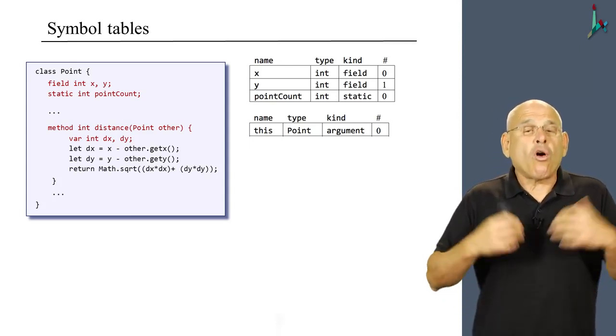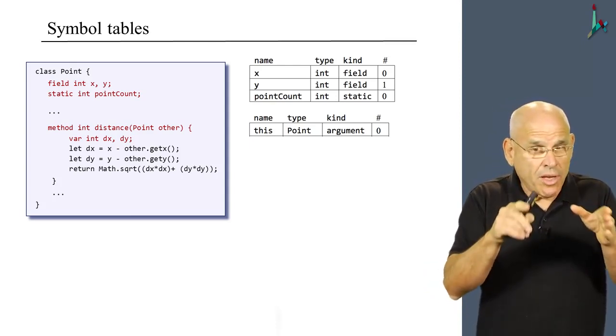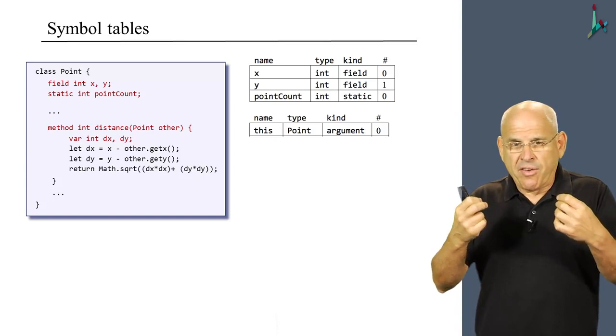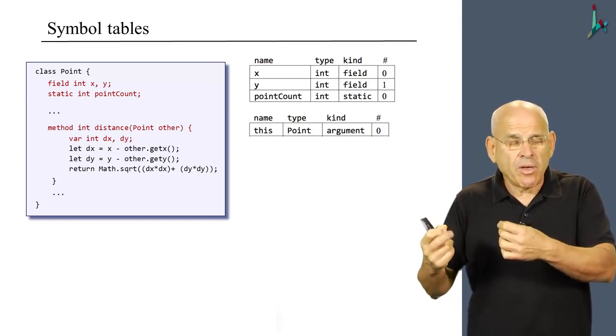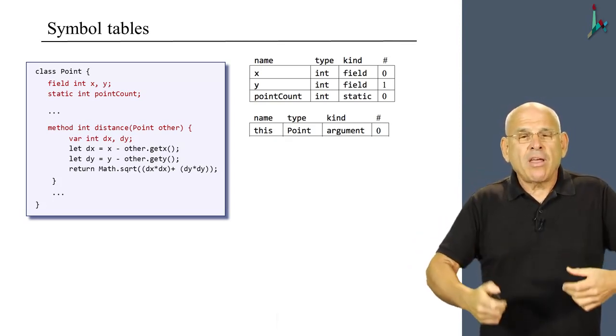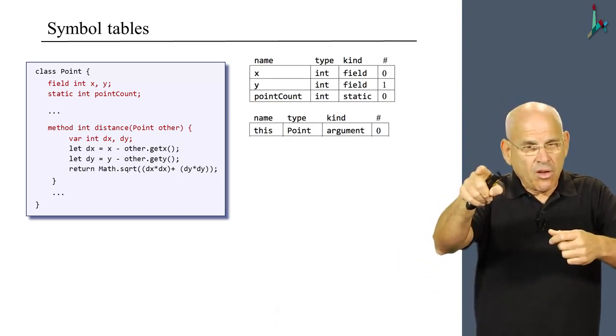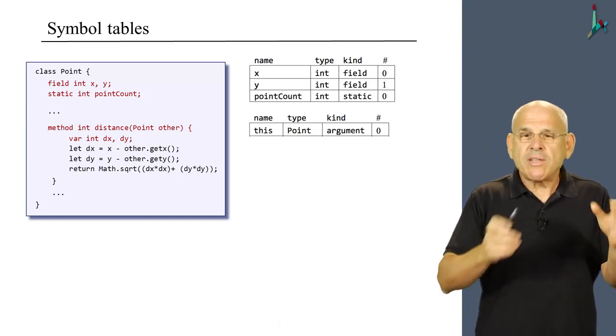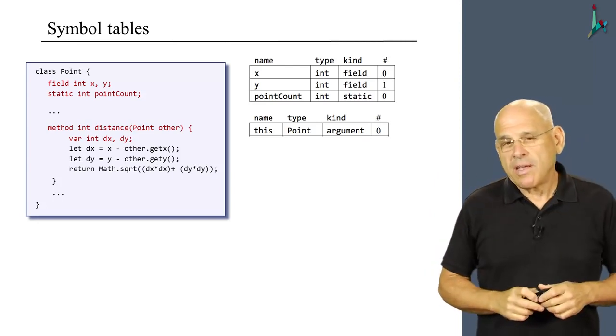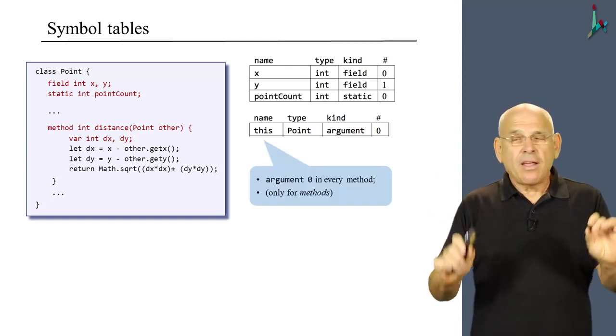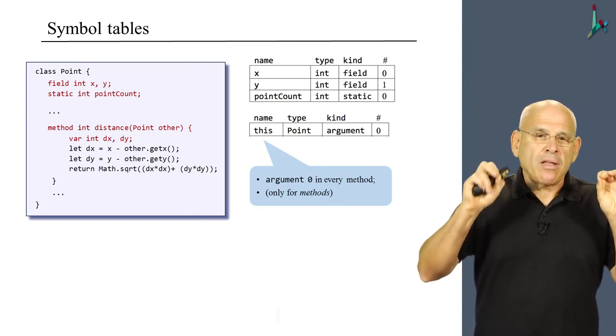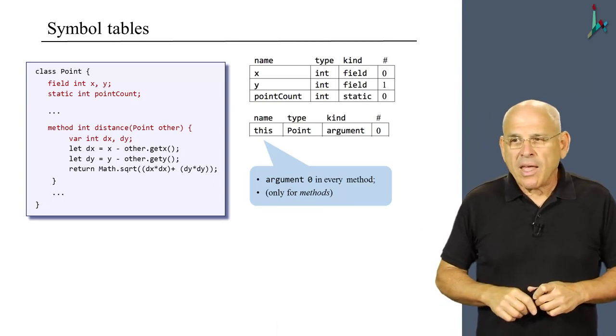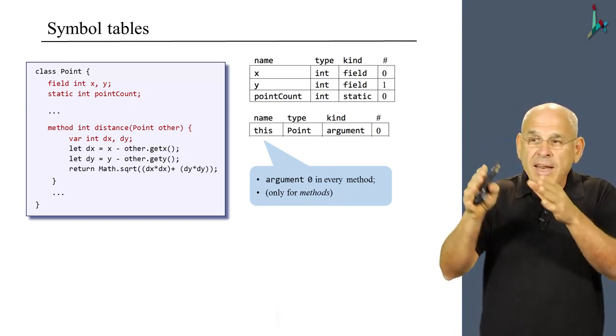And therefore, the symbol table of this method begins with a somewhat surprising entry, which is the properties of the current object. The name of the current object is this. The type of the current object is always the name of the class to which this subroutine belongs. In this case, it's Point. And this particular variable, this, is always treated as argument zero.